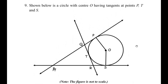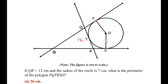Let us first understand this question. The circle has three tangents — at point P, at point T, and at point S. The length of QR is given as 12 centimeters. The radius of the circle is 7 centimeters, so OP is 7 and OS is also 7 centimeters.